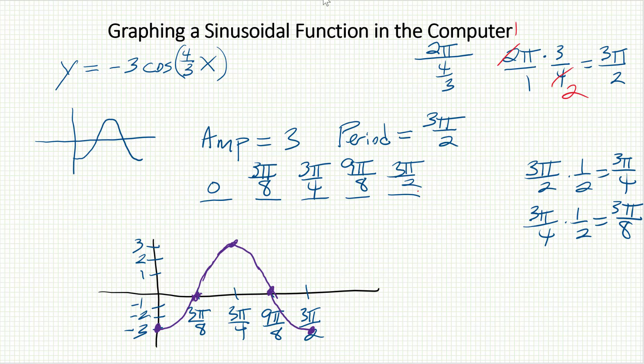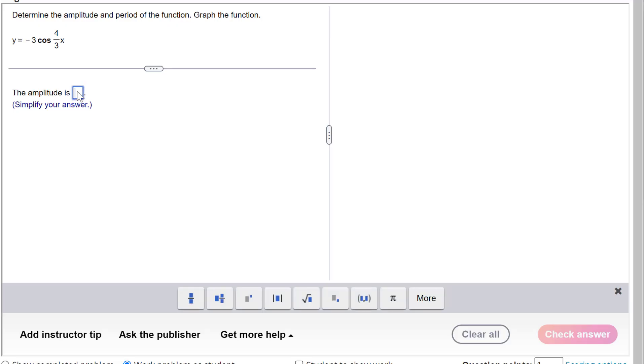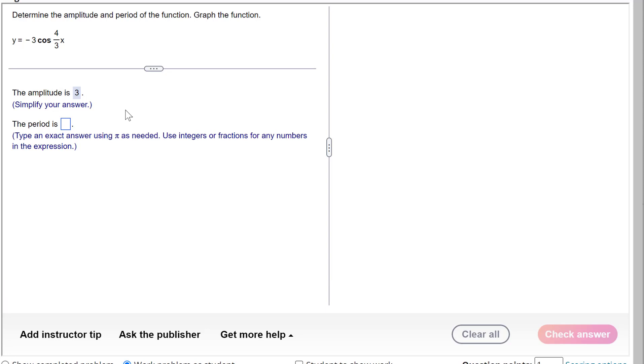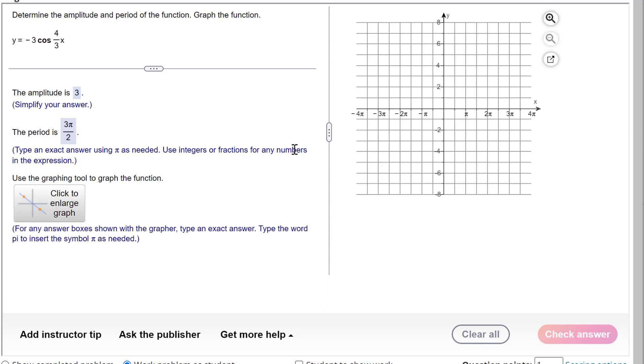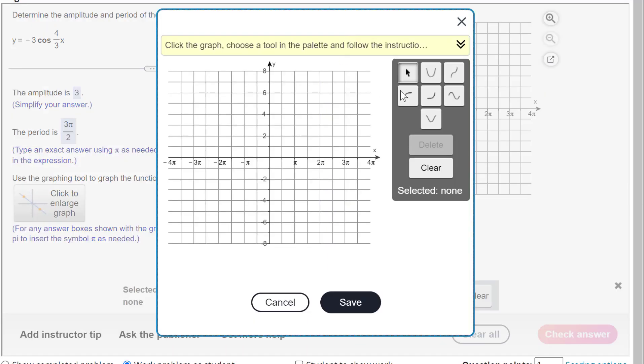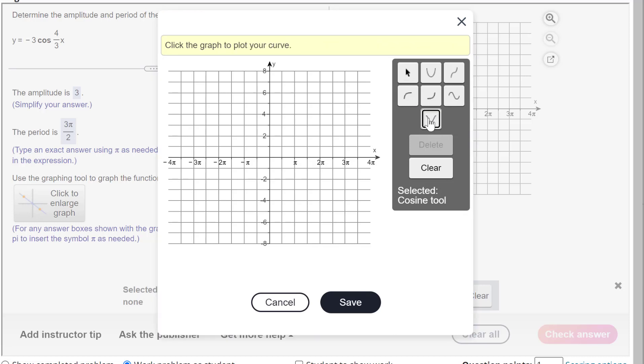Now let's go back to the computer. Here, I'm going to fill in the amplitude. It was 3, and I'm going to fill in the period. It was 3 pi over 2. That's all fine. Then it wants me to draw a graph. So I'll come over here to the graph, and notice that there is a tool for the sine shape and a tool for the cosine shape. So far, so good. So I'll pick the cosine shape.